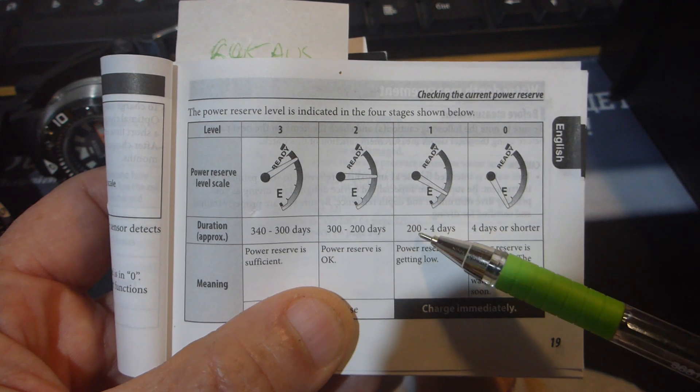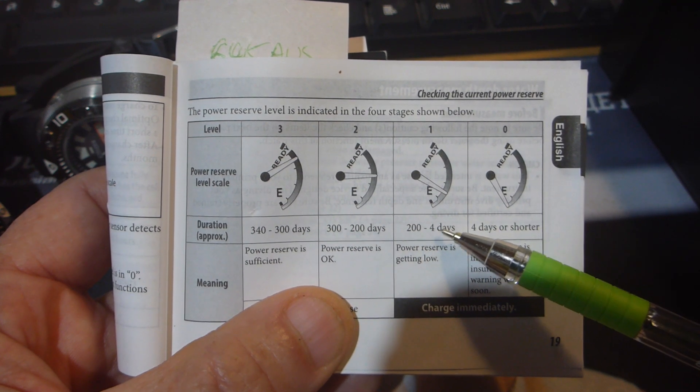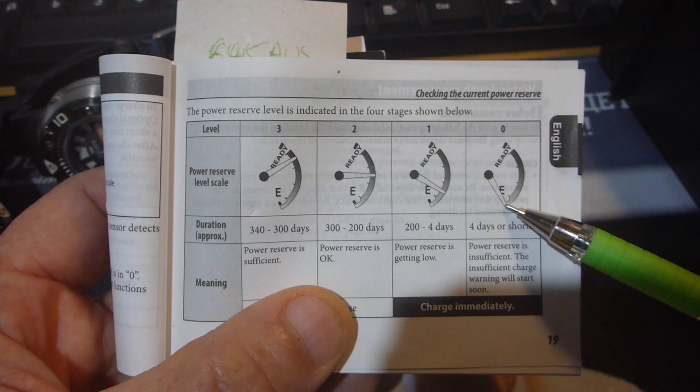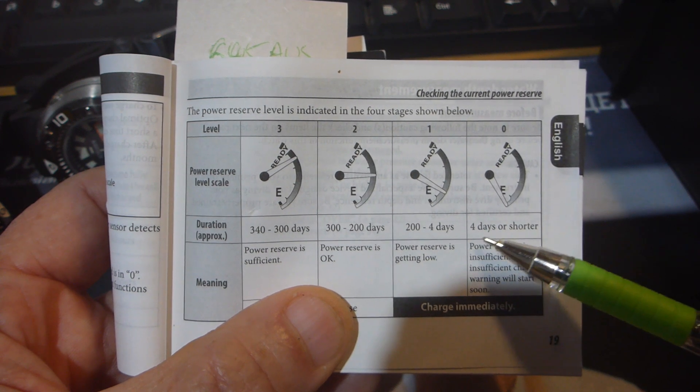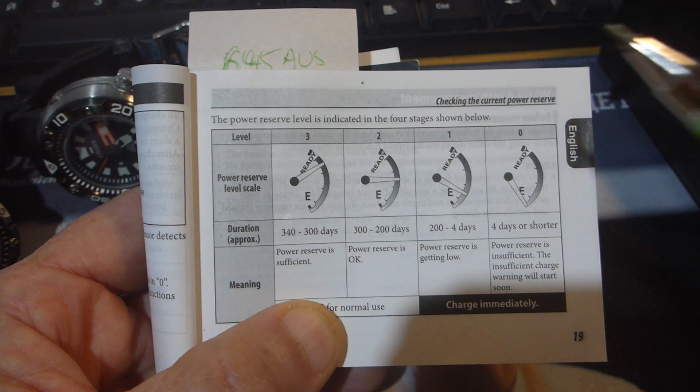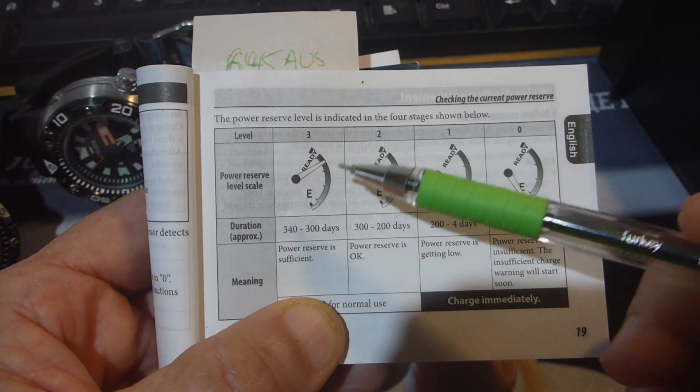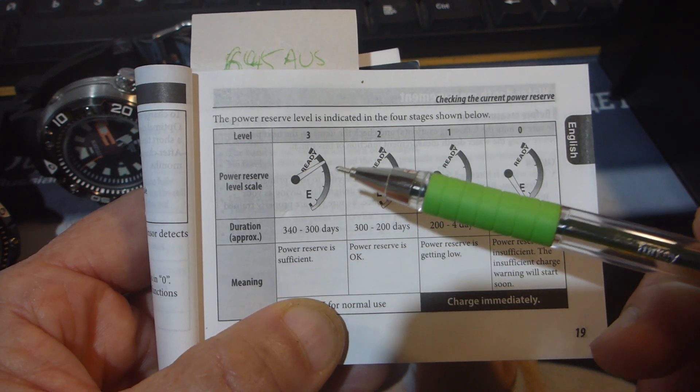And on the E sign, it's basically empty, it's ready to stop, four days or shorter. So according to the manual here, this particular Aqualand requires about four and a half hours of full sun, that's 100,000 lux worth of sun for four and a half hours.